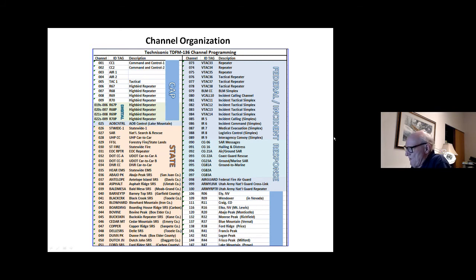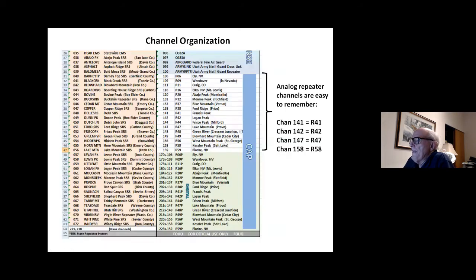The national headquarters has changed the national template. They've put some of these federal interoperability channels in different places. We've had them in ahead of time. So over time, we're going to be moving these a few places just to conform with the national code plug. The analog repeater channels are easy to remember. Channel 141 for R41, 142 for R42, etc. Here are all of the channels on this card, not that are in the radio, but the ones that we probably use the most. All of the Utah Wing repeater channels, and then some of the neighboring states repeater channels.